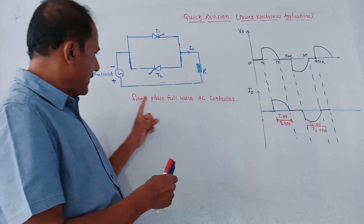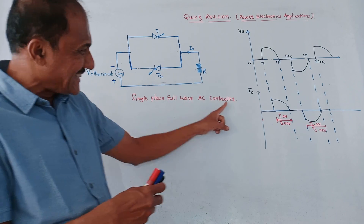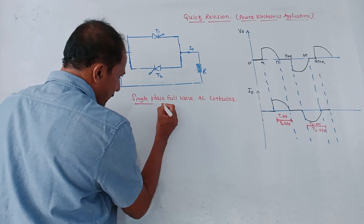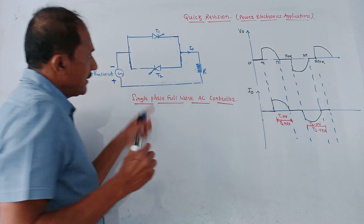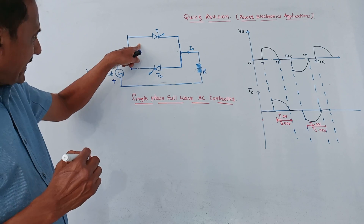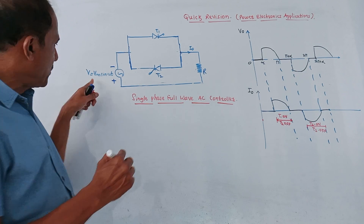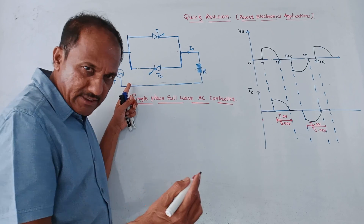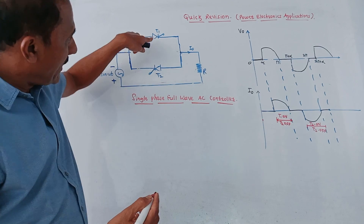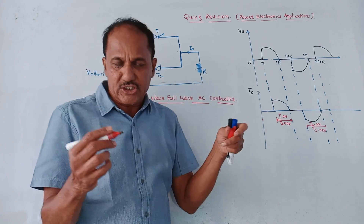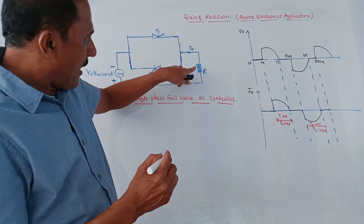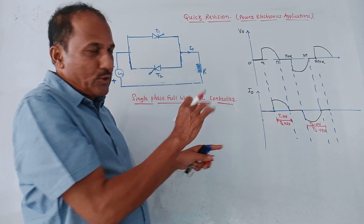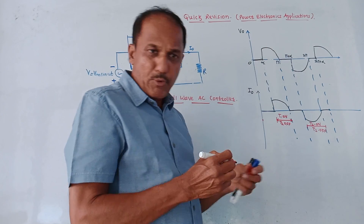The first part is the single phase full wave AC controller. As the name indicates, this is a full wave AC controller. This is the corresponding circuit diagram. At the input side, we apply Vm sin(ωt), which is a standard signal. We are considering two SCRs — two thyristors, T1 and T2. R is the load resistance connected at the output. These are the corresponding waveforms.